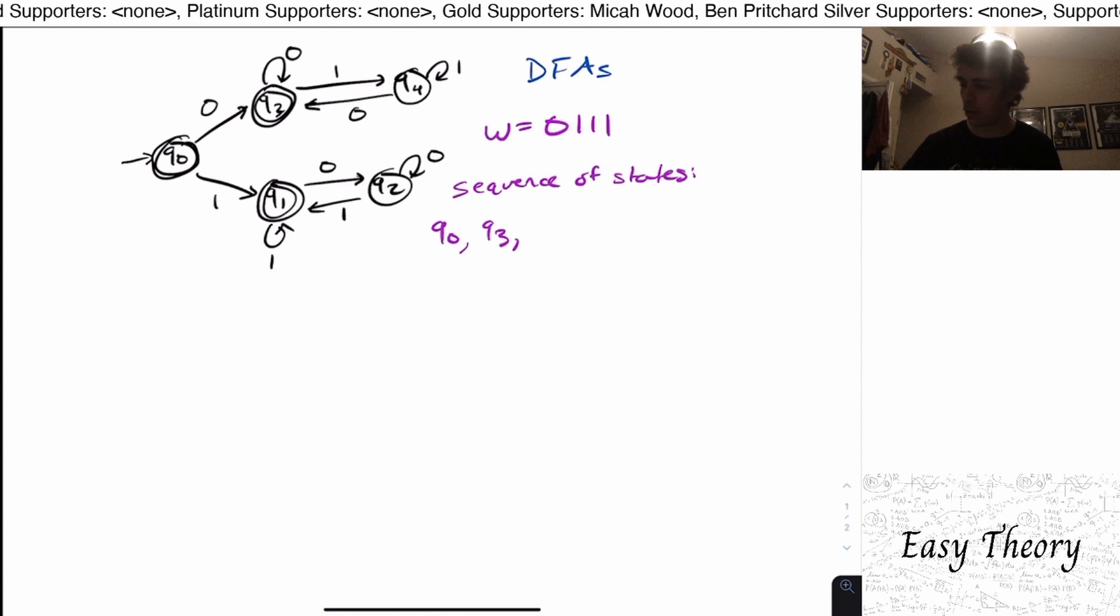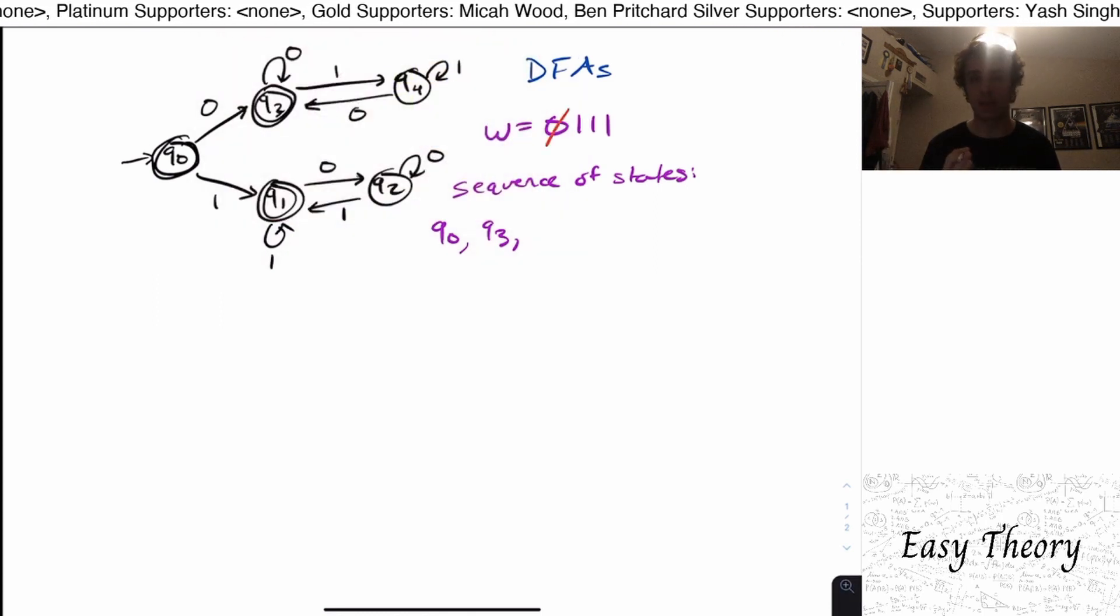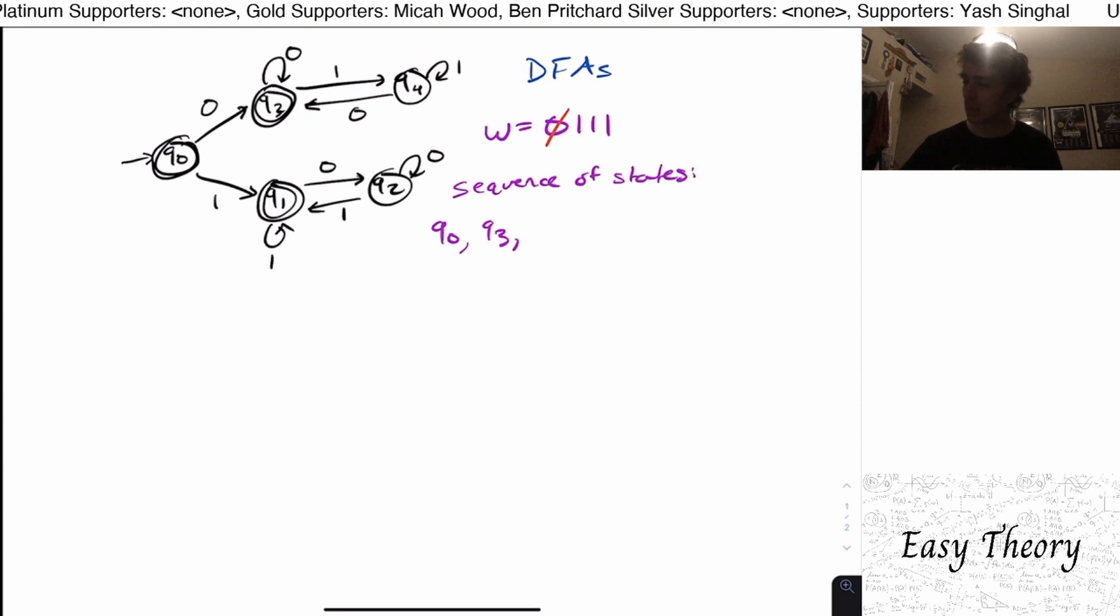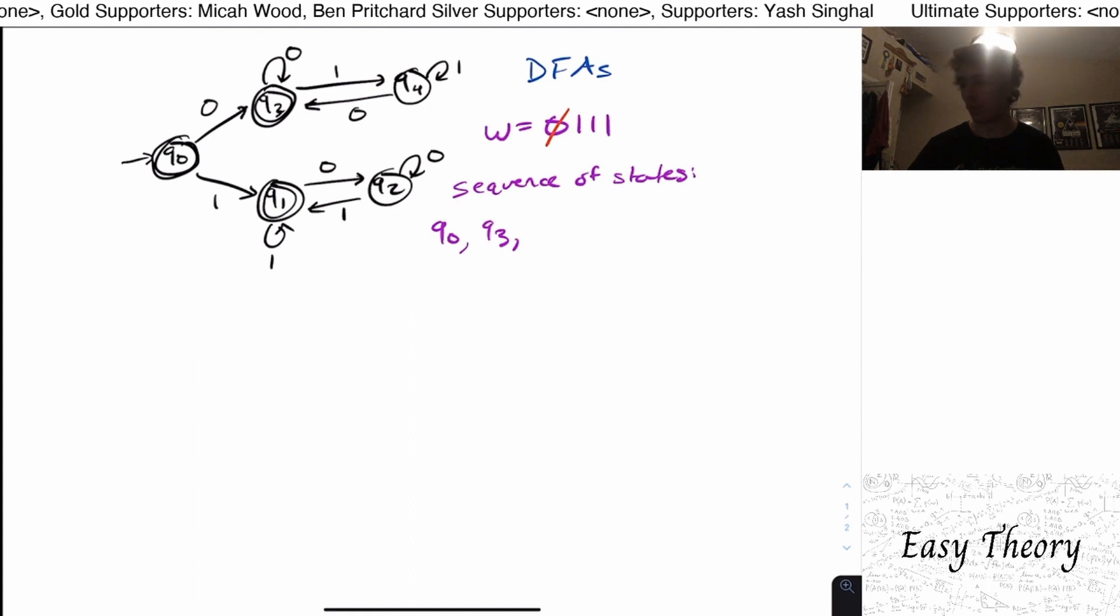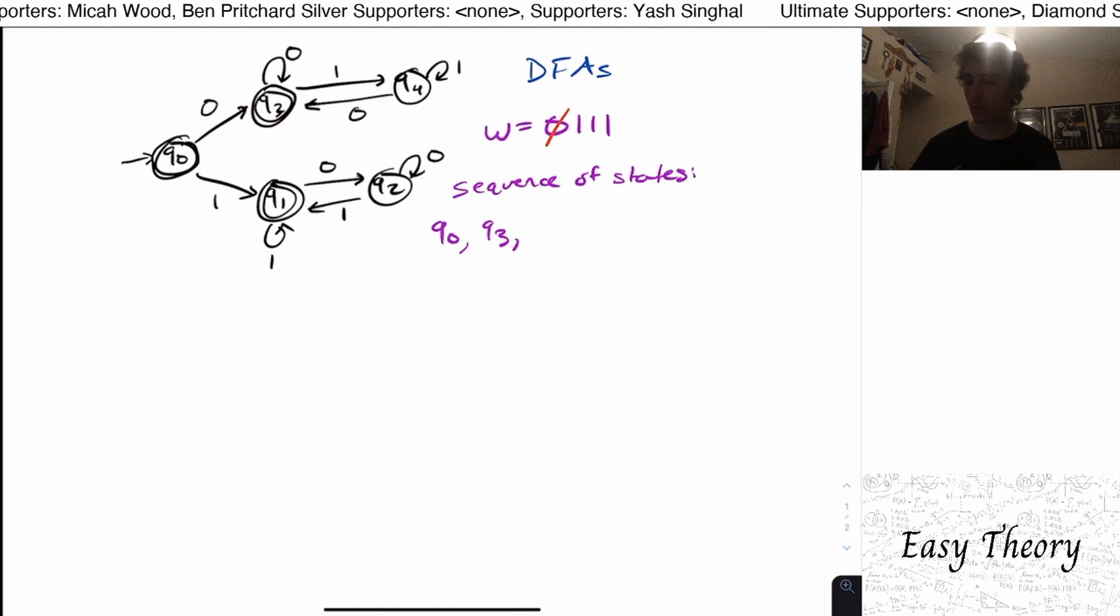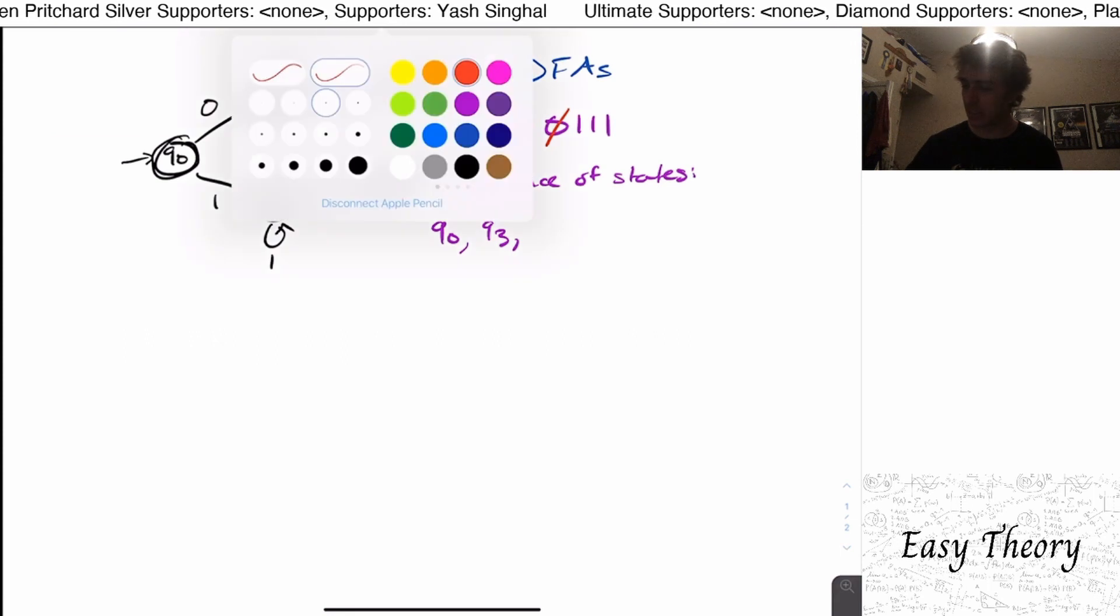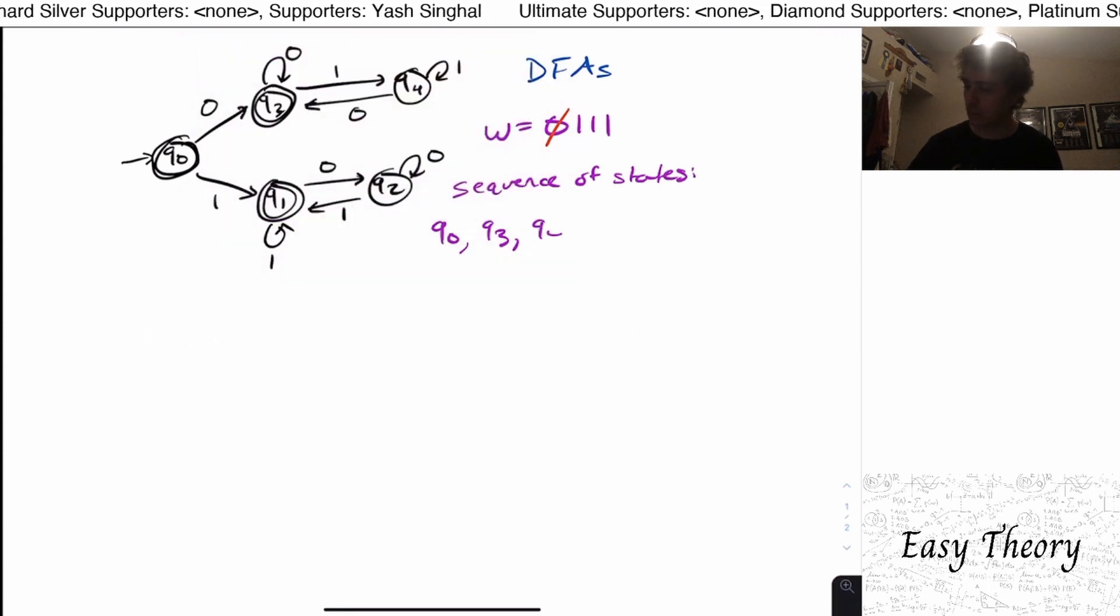And then so now, we have consumed the character zero, we can't go back. Now we're looking at the one. So we are in q3 right now, figure out where we go on input one. So q3, there can only be one transition with the one on it coming out of q3, which is going to q4. So the next state in our sequence is q4.